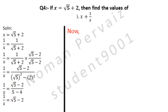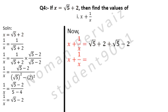Now look at part 1. We take x plus 1 over x, and next we replace the values of x and 1 over x. The value of x is under root 5 plus 2, plus the value of 1 over x which is under root 5 minus 2. Plus 2 is cancelled with minus 2, and under root 5 plus under root 5 becomes 2 under root 5. Hence, this is our answer.